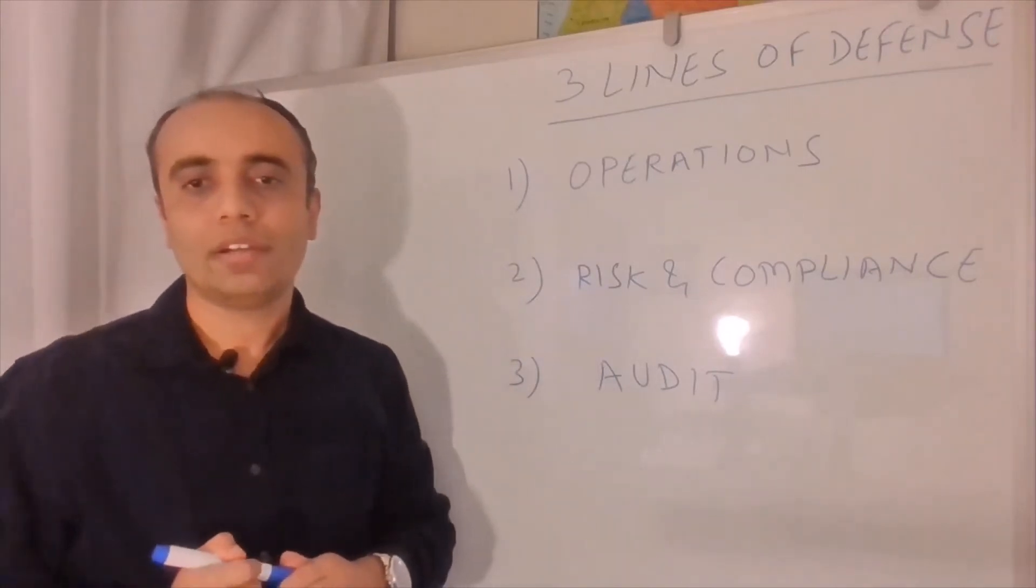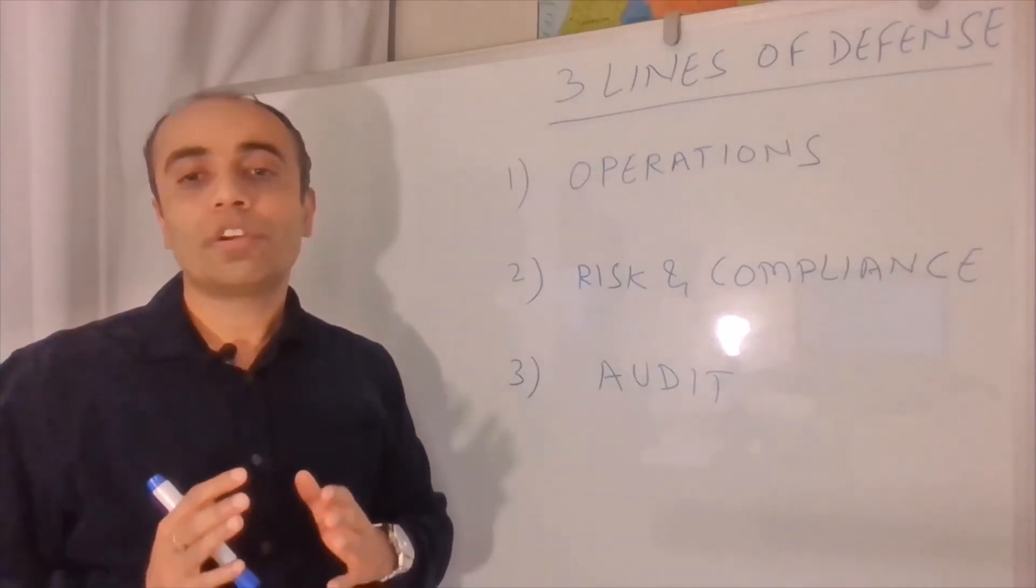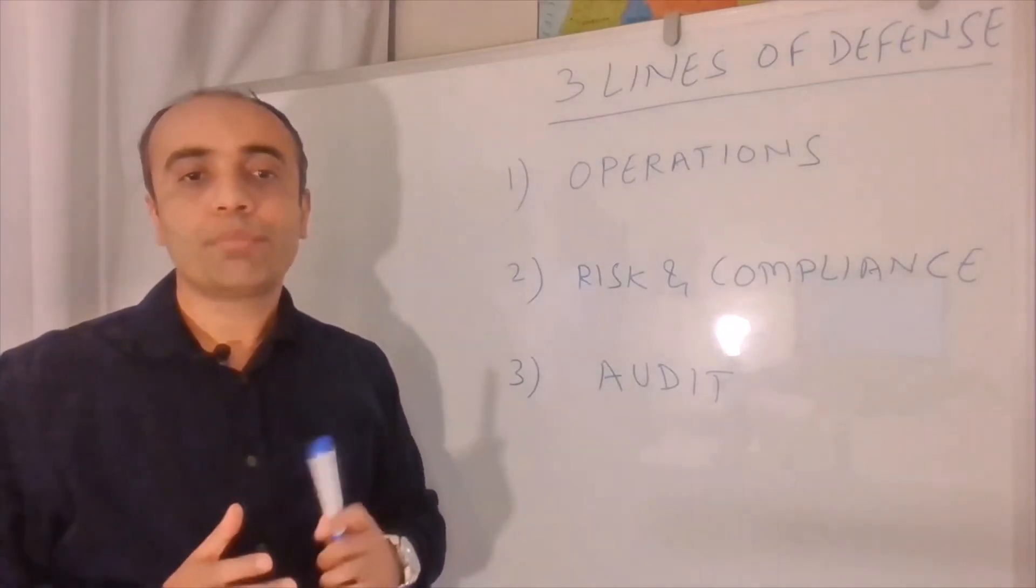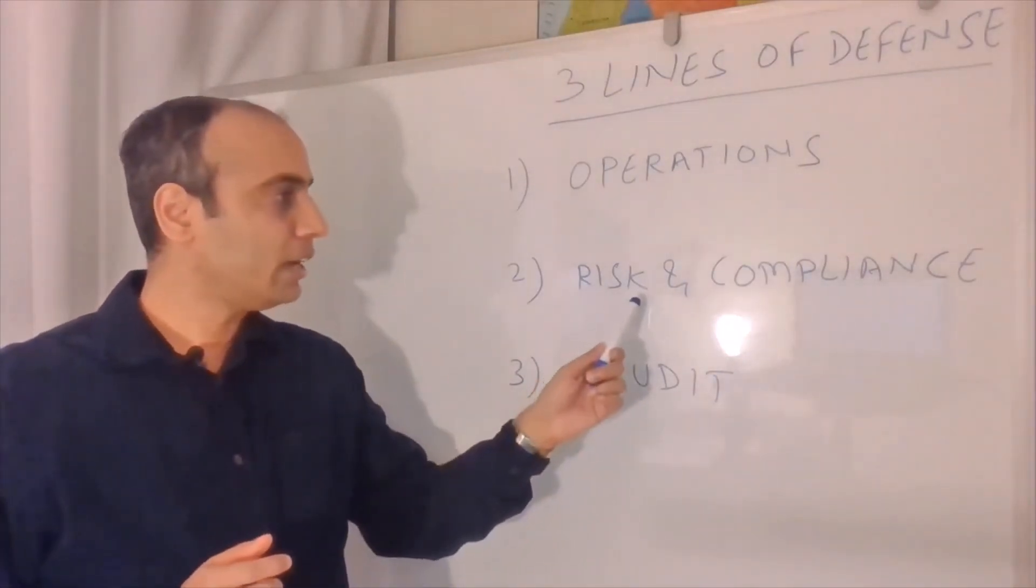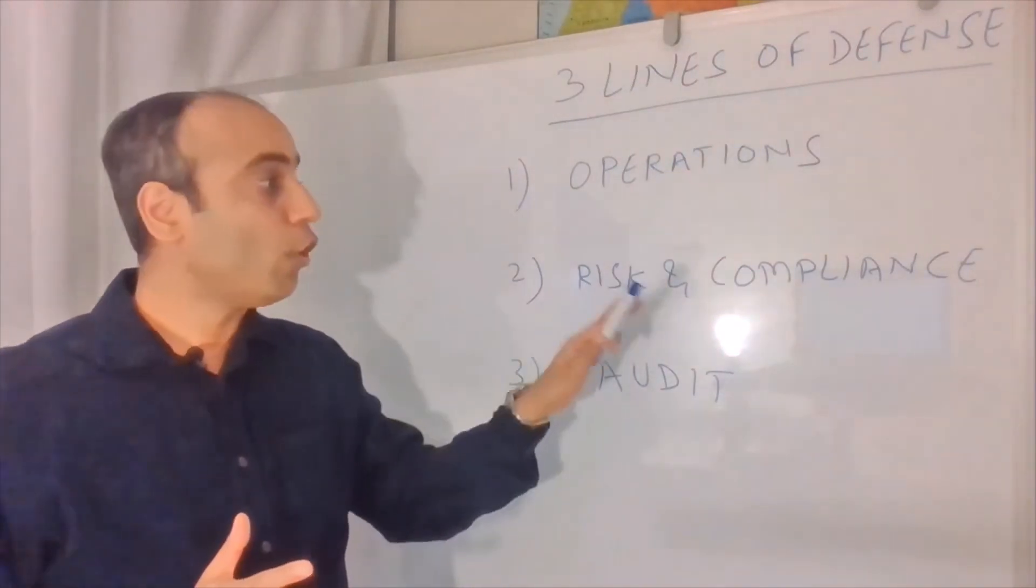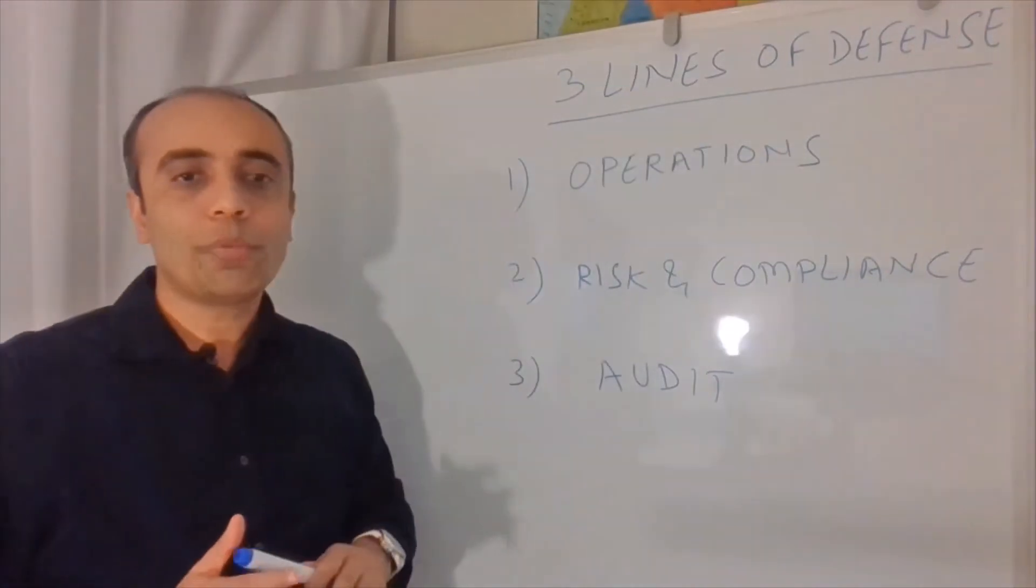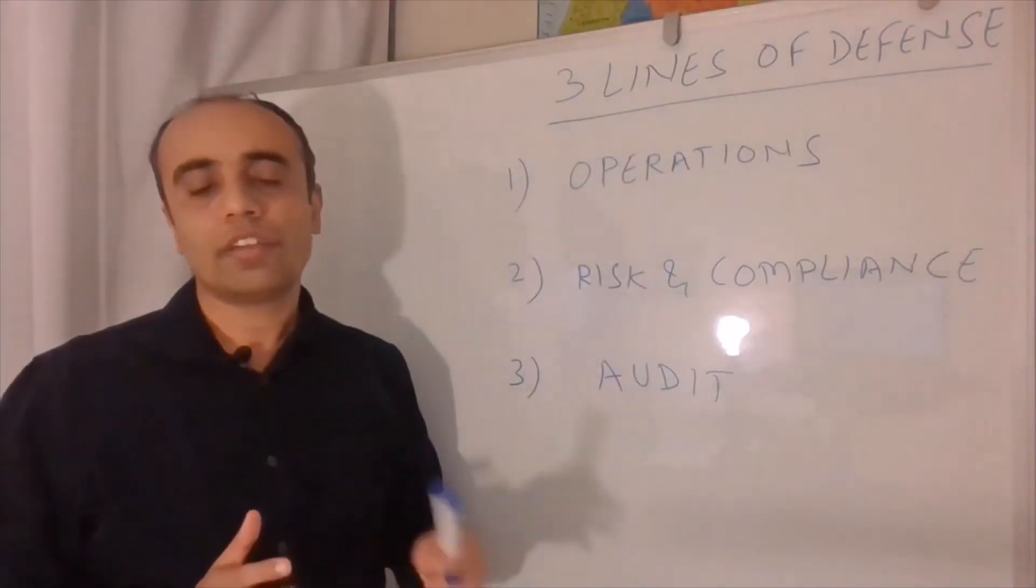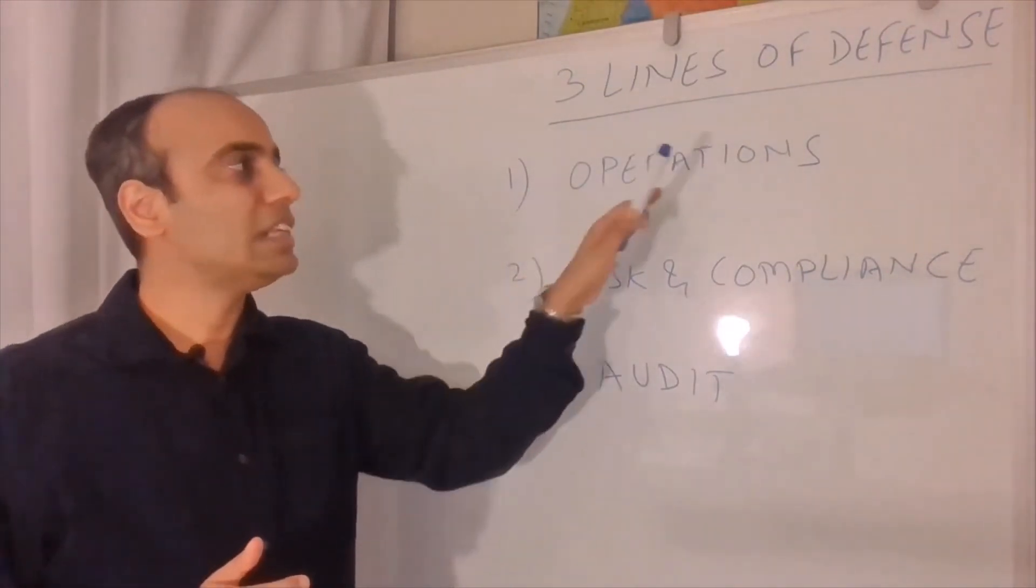Now, going back to the example we had. So, audit team will be responsible to verify the procedures and guidance defined by the risk and compliance teams. They're all appropriate. And they're all being followed by the operations team, which in the case of our example, were the sales and the marketing teams.